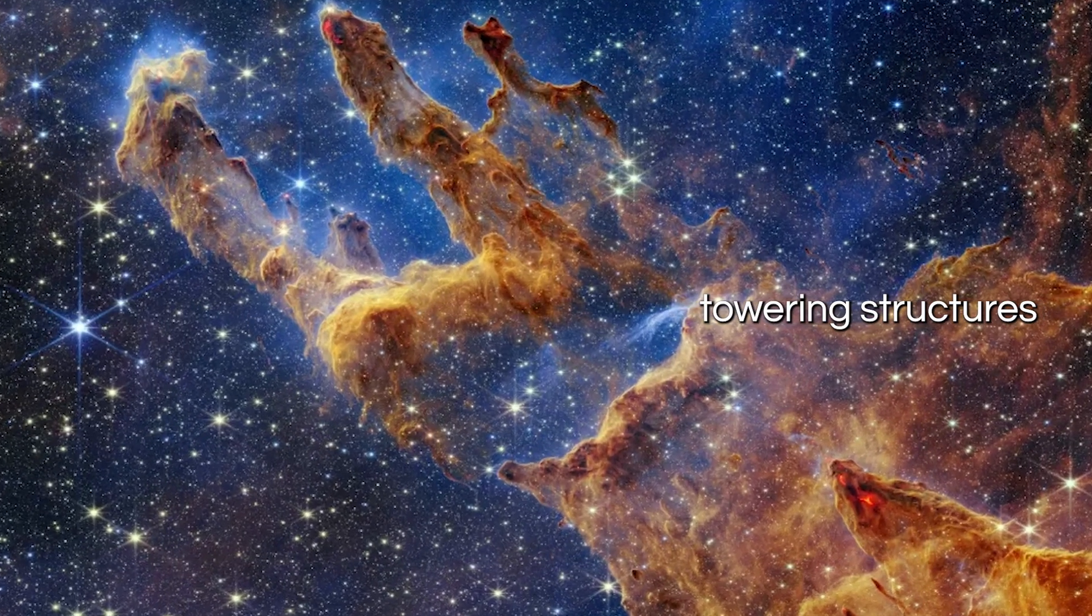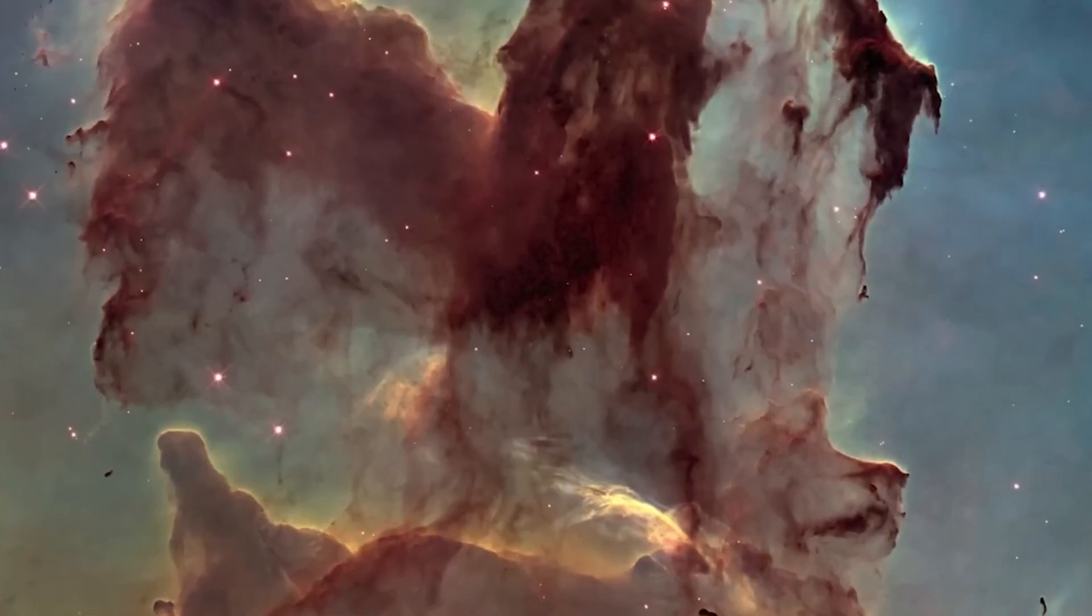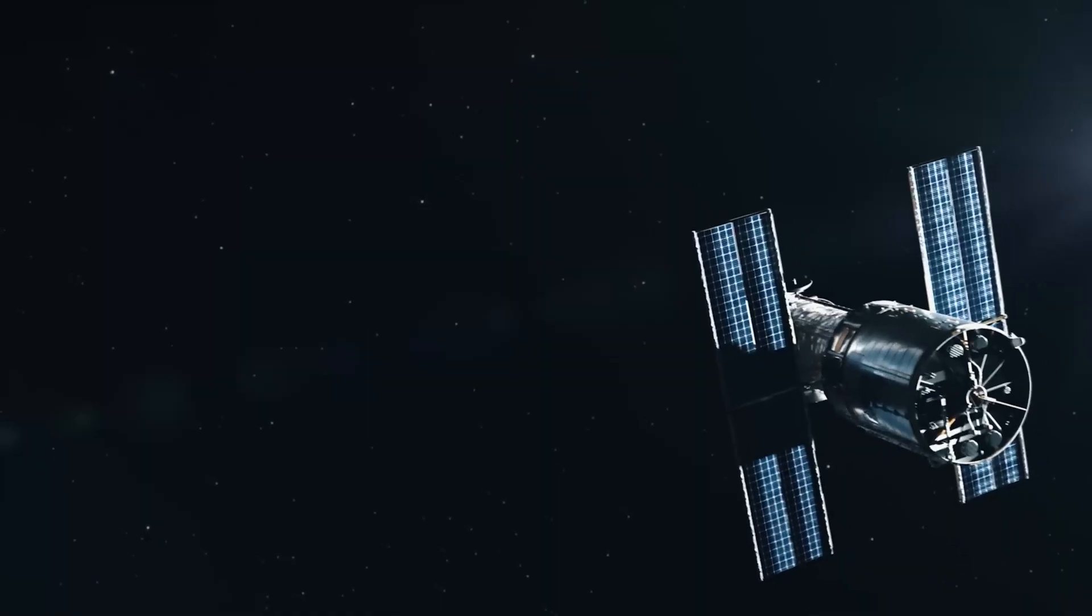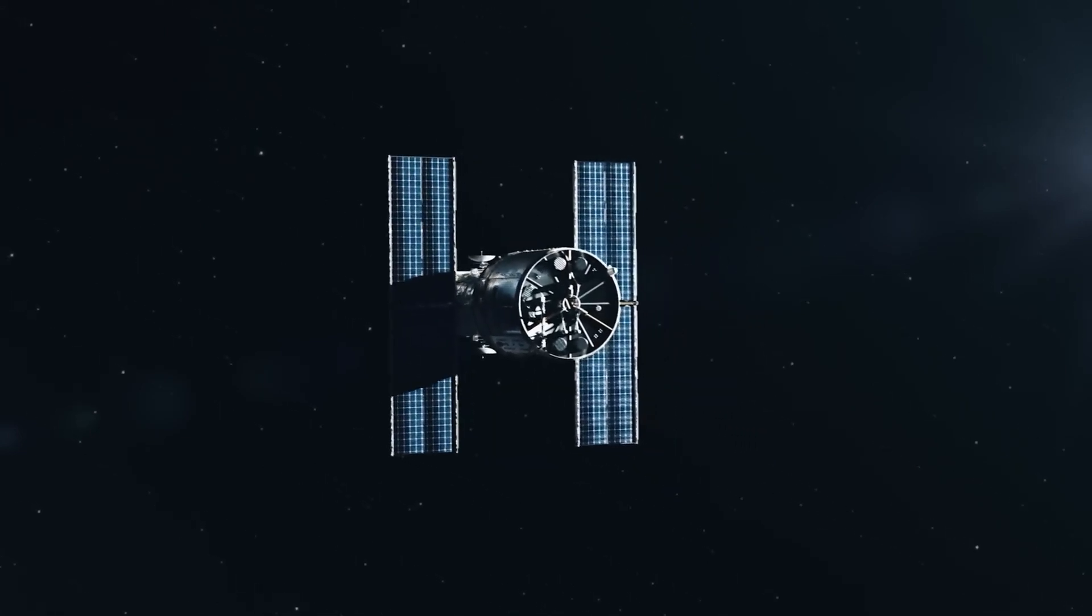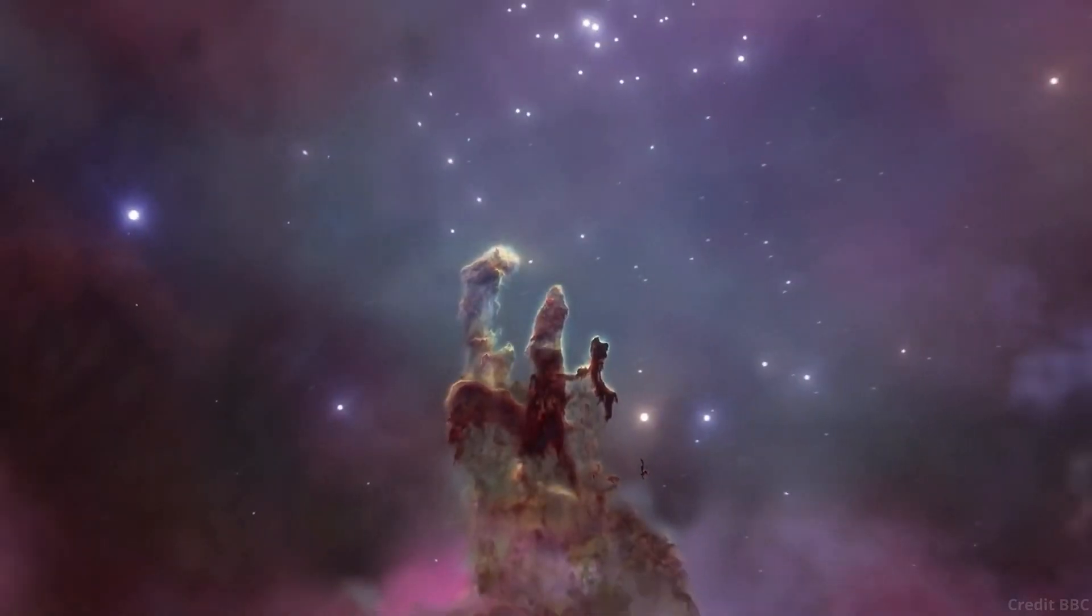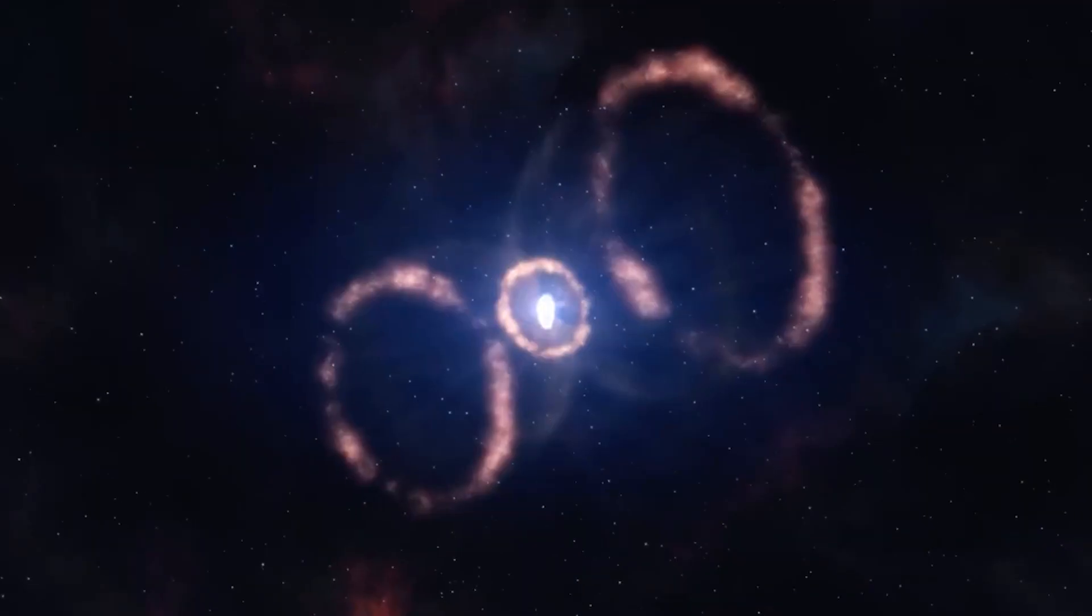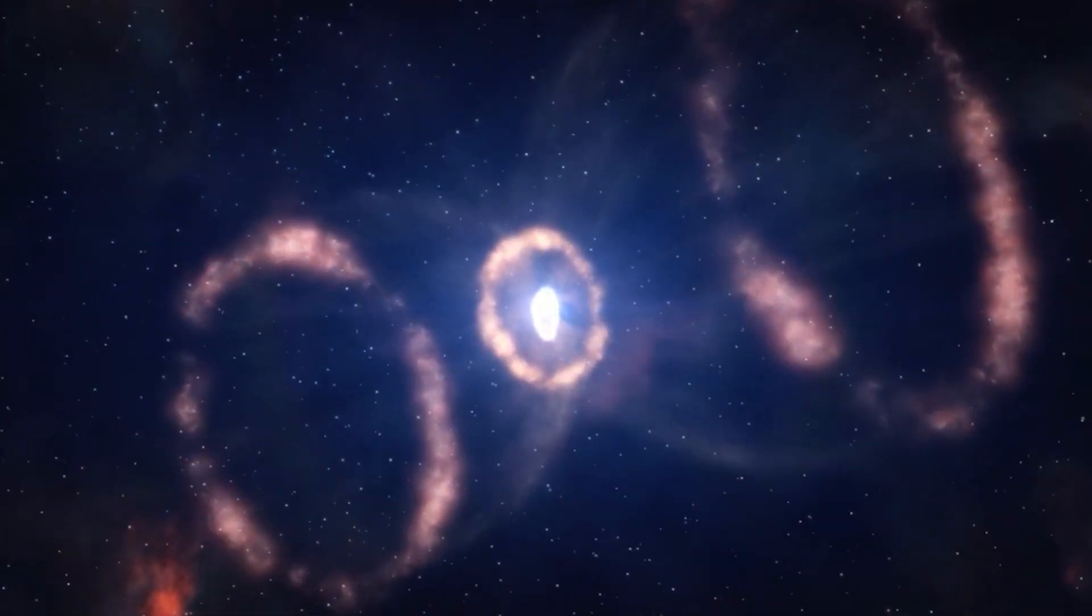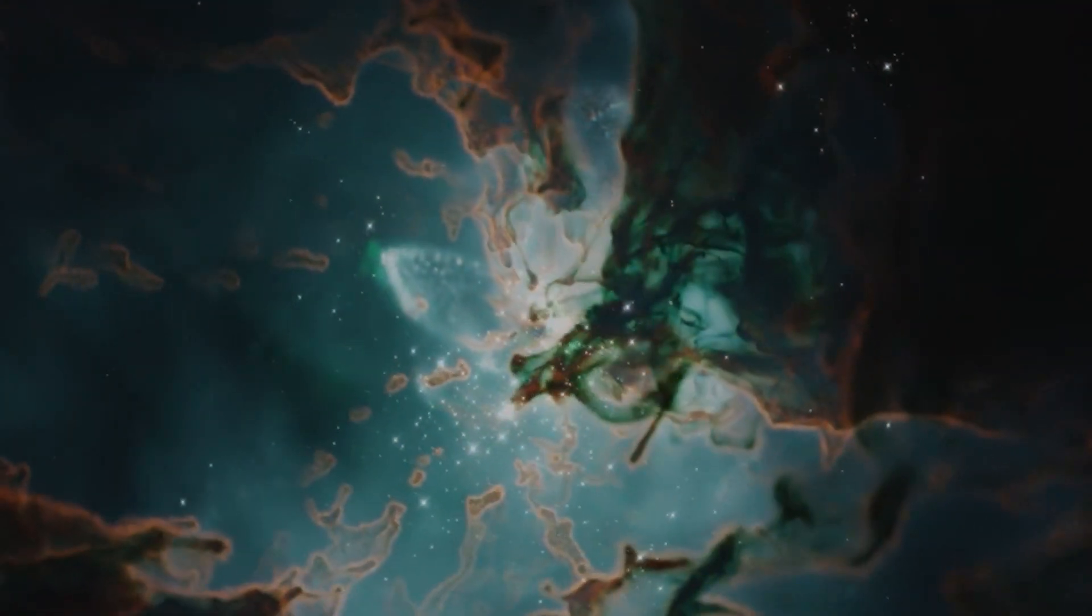These towering structures, composed of gas and dust, stretch across an immense distance of about 6,500 light-years in the Eagle Nebula. Originally captured by the Hubble Space Telescope in 1995, the James Webb Space Telescope has now unveiled an even more breathtaking portrait of these celestial giants. Scientists are thrilled, as this new image may hold vital clues about the birth of stars and the intricate dance they perform, shaping the cosmic landscape that surrounds them.